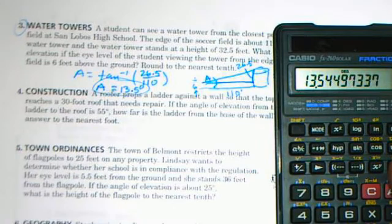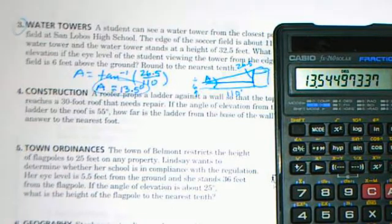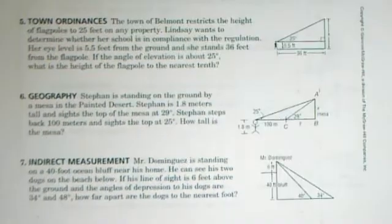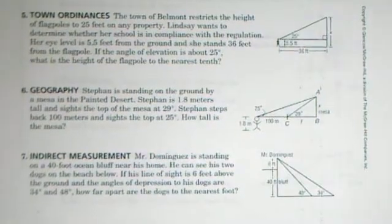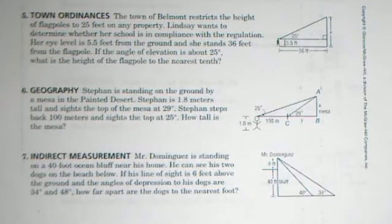Let's look at number five. Okay, so flagpoles can't be more than 25 feet in this town. Lindsay wants to determine how high her flagpole is. Her eye level is five and a half feet up off the ground and she's 36 feet away from the pole, and she has a 25 degree angle of elevation and how tall is the flagpole.